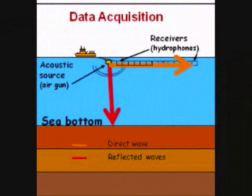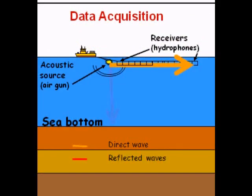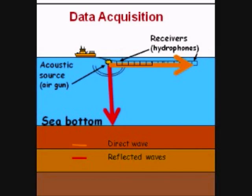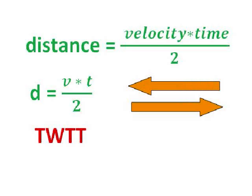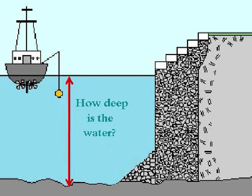Now let's look at a reflective wave. Here we have this first red wave. Using the TWTT formula, d equals v times t divided by 2, they can calculate the depth of the water.